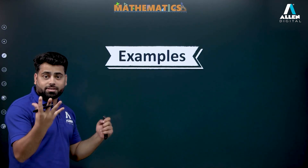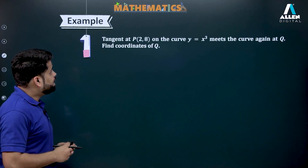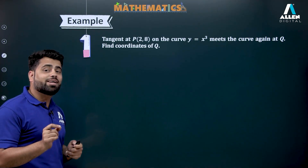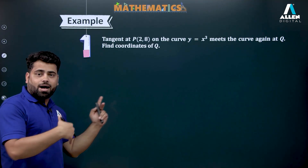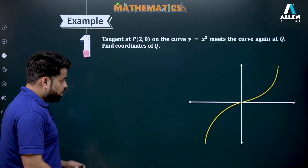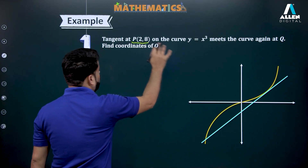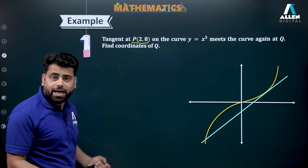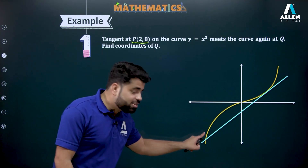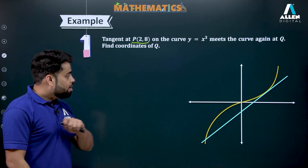Let's see a question based on that concept: tangent at P on the curve meets the curve again at Q — find the coordinates of Q. The curve is y = x³, and point P is (2, 8). Graphically, we know how to plot y = x³; somewhere here is (2, 8). If your graph is fair, you can see the tangent again intersects the graph and your answer would for sure be in the third quadrant — you can cross-check your answer.